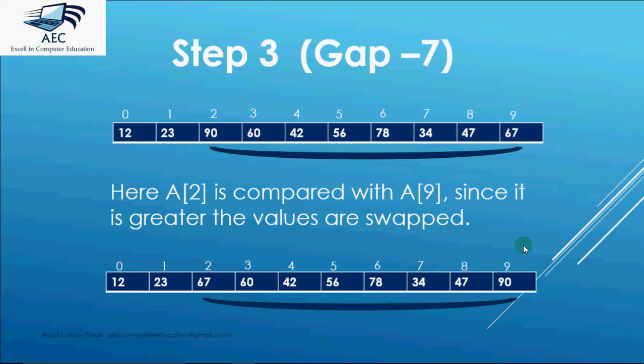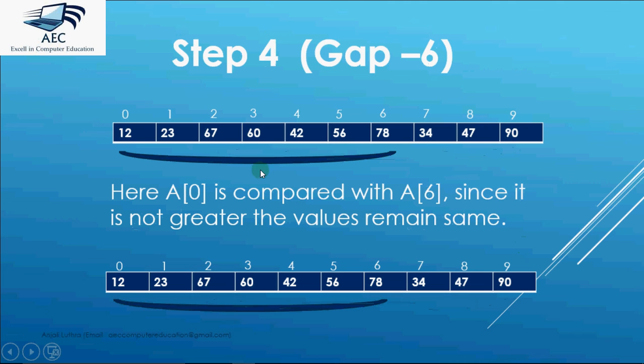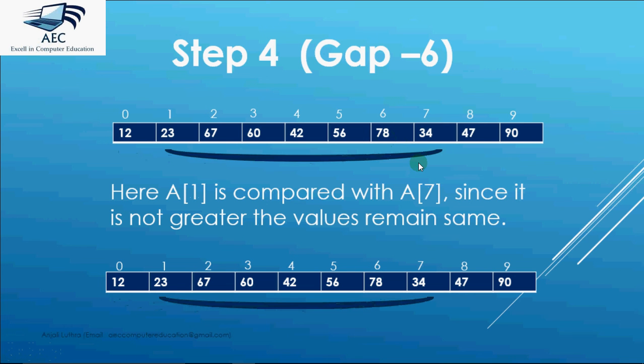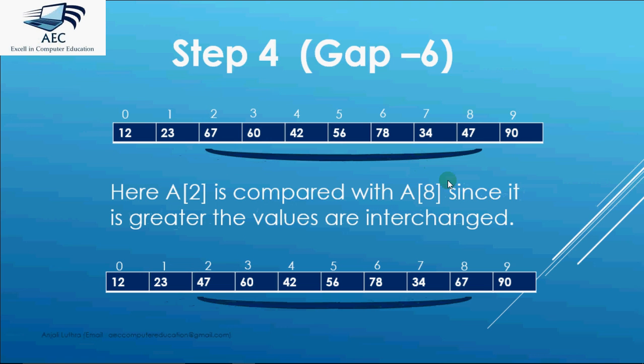Then in step 4 there will be 4 comparisons in total starting from a[0]. So a[0] is compared with a[6] that is a gap of 6. No swapping required. Then a[1] is compared with a[7]. Then a[2] is compared with a[8]. All are at the gap of 6.